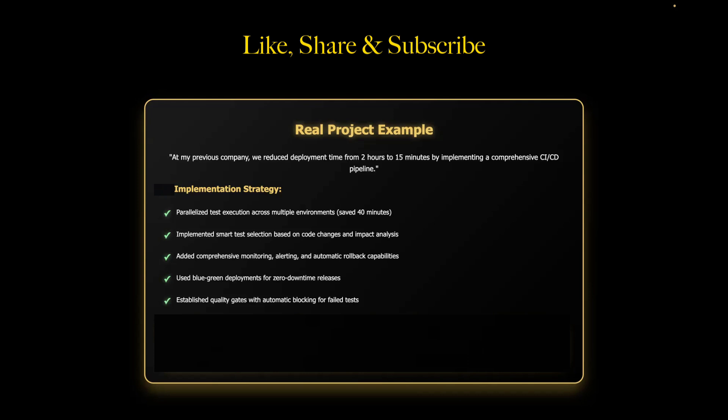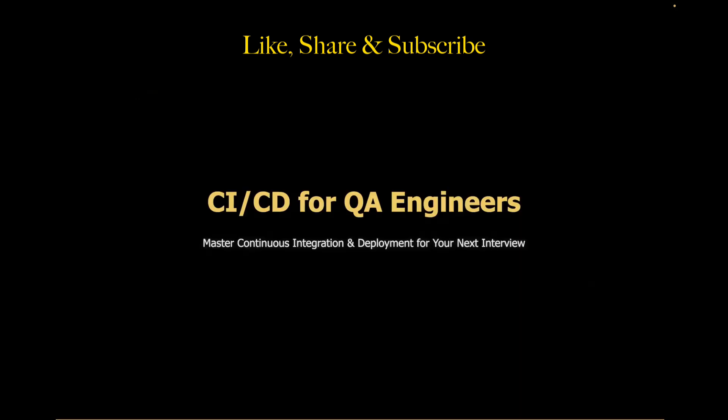That's everything you need to know about CI/CD as a QA engineer. Let me quickly recap the key points. CI/CD is about automatically building, testing, and deploying code changes safely and quickly. As a QA engineer, you must design the testing strategy, write automation tests, and set quality gates. The most popular tools are GitHub Actions, Jenkins, GitLab CI, and Azure DevOps. Always remember the testing pyramid: 70% unit tests, 20% integration tests, and 10% end-to-end tests. And don't forget to track your metrics: pipeline success rate, duration, test coverage, and mean time to recovery.